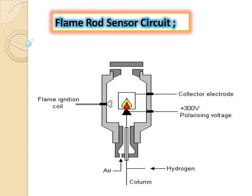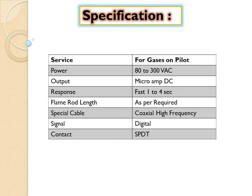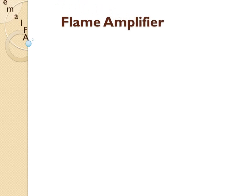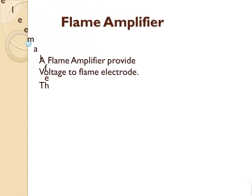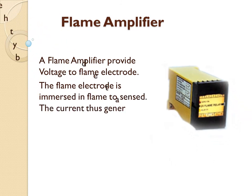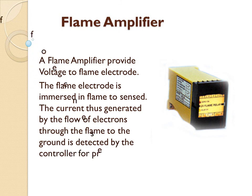Flame rod sensor circuit specifications: service for gases on pilots, power 80 to 300 volt AC, output in micro ampere DC, response time 1 to 4 seconds, flame rod length as required, cable coaxial, frequency signal digital contact single pole double throw. A flame amplifier provides power to the flame electrodes. The flame electrodes sense the current generated by the flow of electrons from the flame, which is detected by the controller for the presence of flame.